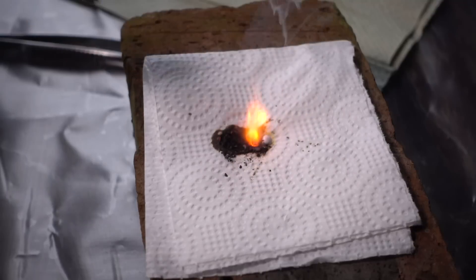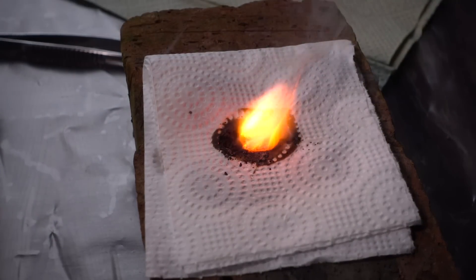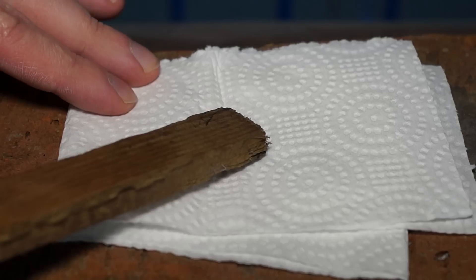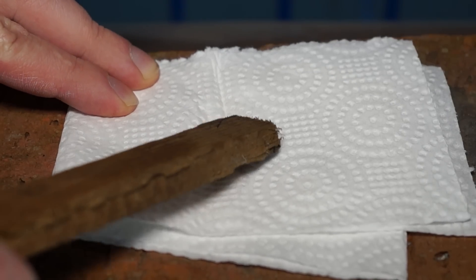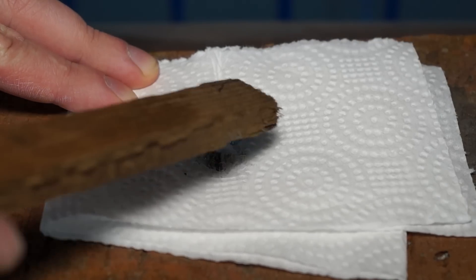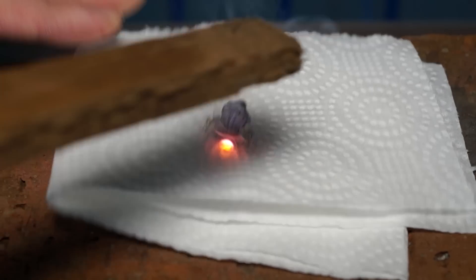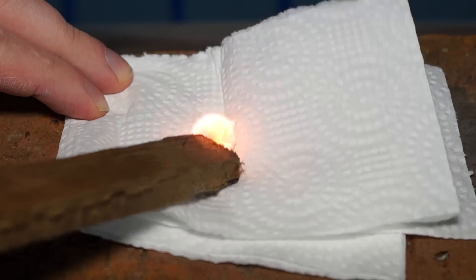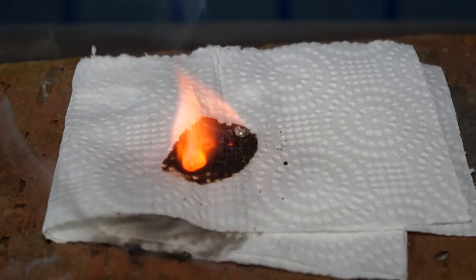Thus potassium superoxide and potassium peroxide are formed. Also, for this reaction, the napkin is involved. Because of its higher activity, the potassium can pull oxygen from the cellulose molecules that napkins are made of.